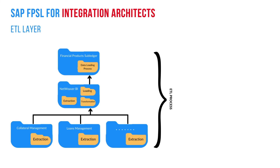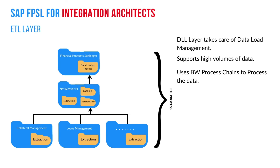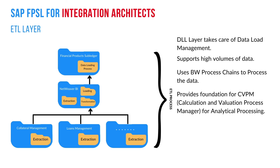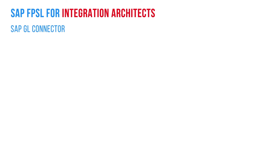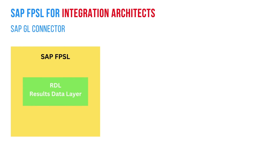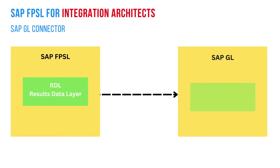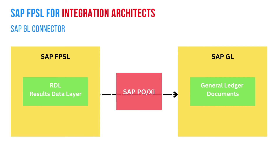Let's have a brief look at the ETL layer of SAP FPSL. As you can see, we extract data from various data sources and load it into the DDL layer, which takes care of extraction, transformation, and loading into relevant datasets. After this, we start the valuation process using CBPM processes. The SAP GL connector is the out-of-the-box component that enables SAP FPSL to post subledger documents into the SAP GL system. This component handles mapping and translation of subledger documents to general ledger documents, and works with the SAP PO component using proxies to extend the data.